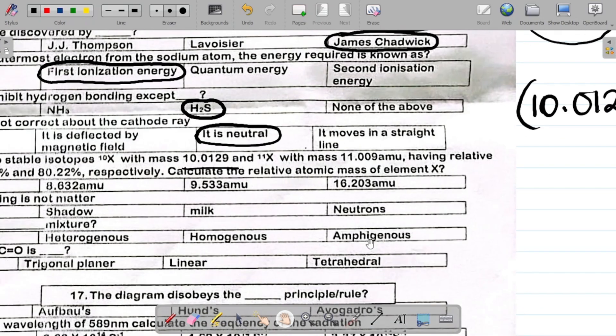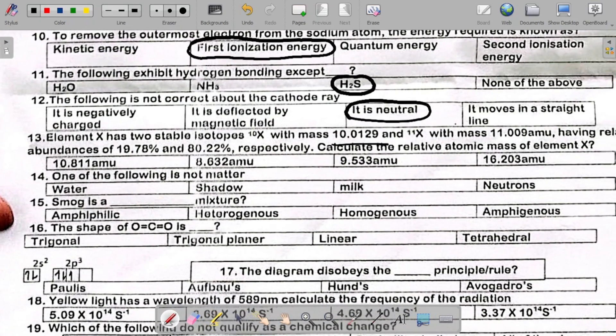So which option is 10.812? So 10.811. I'll just go with this. But it should have been 812 approximately. So I'll just circle this. That's your answer.